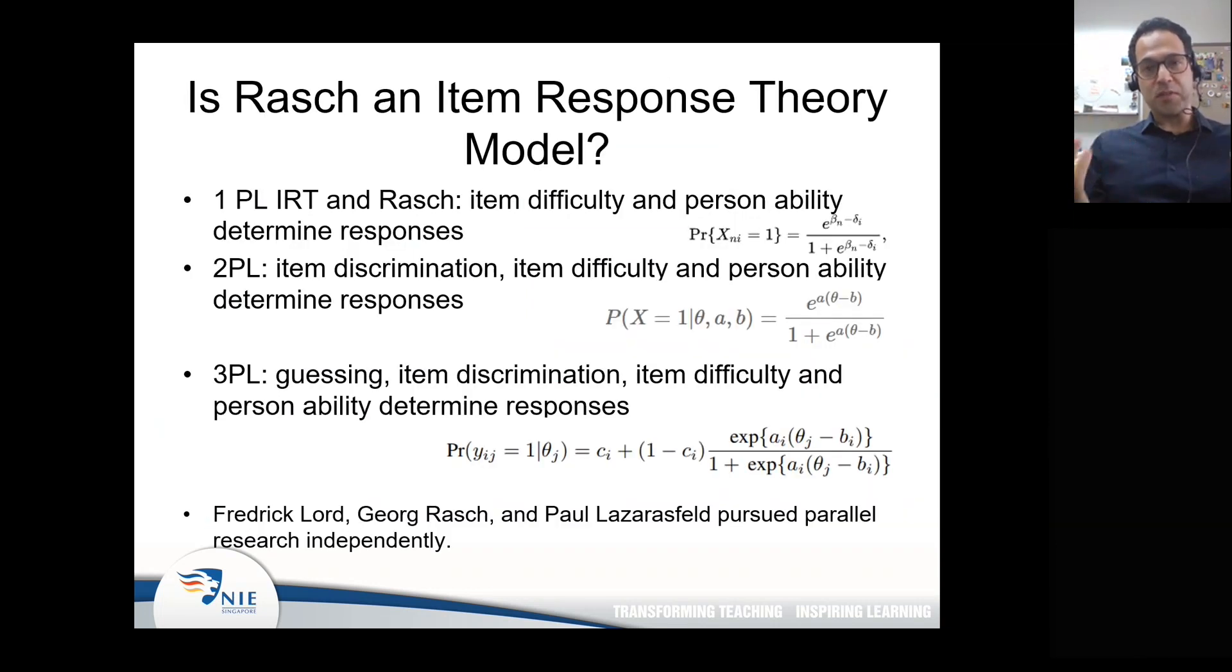The question is, and this is something that a lot of people always ask, is Rasch measurement an item response theory model or are they different? Well, there are two schools of thought. Historically, they're very different in the sense that the people who were developing them were not working together. They were working independently. Parallel research areas were being developed independently in different parts of the world. Frederick Lord, for example in the US, Paul Lazarsfeld in Austria, were working on models which are known as item response theory and quite a few other people. As I mentioned, Georg Rasch was working on his model. From this perspective, no, they're not the same. They're different. From the perspective of philosophy, they're also different in the sense that Rasch is a so-called prescriptive model, whereas IRT is descriptive.